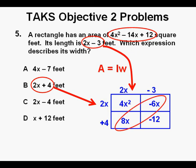Next, we add our like terms together, which are the x terms, 8x and negative 6x. So the two terms combined are 2x, here shown in red. Therefore, the product of this length and width is 4x squared plus 2x minus 12. And since that is not our area of 4x squared minus 14x plus 12, we cross off B because it's not the length that gives us our correct answer.